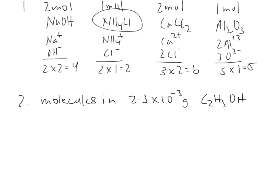So number 2, how many molecules are in a drop of ethanol, and they tell you the mass of that drop is 2.3 times 10 to the minus 3 grams, give you the formula. So I need to change this to moles and then multiply by Avogadro's number.